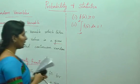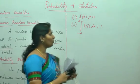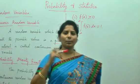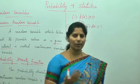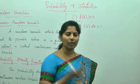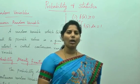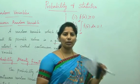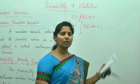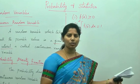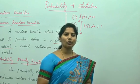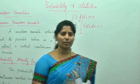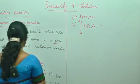In a question, they will ask you to verify whether the given function is a PDF — that is, a probability density function — or not. If the answer is equal to 1, then it is verified and it is a probability density function. If it is not equal to 1, then it is not a probability density function. I will show you an example.